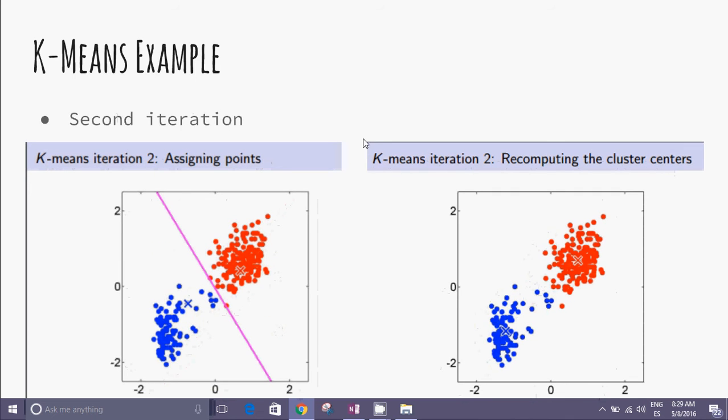The second iteration follows the same steps: assigning points to the new centers and recomputing the cluster centers. This is the assign and recompute cycle of expectation maximization.